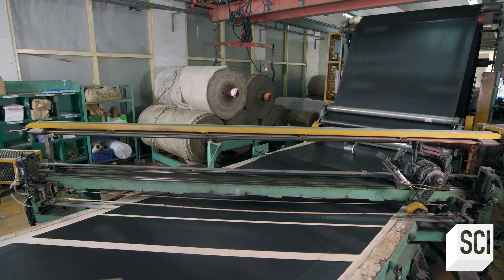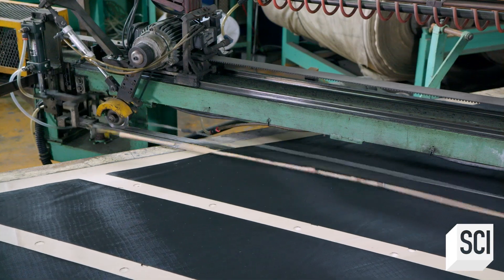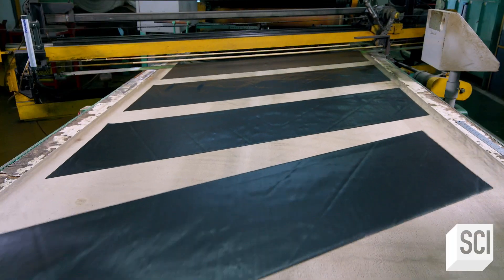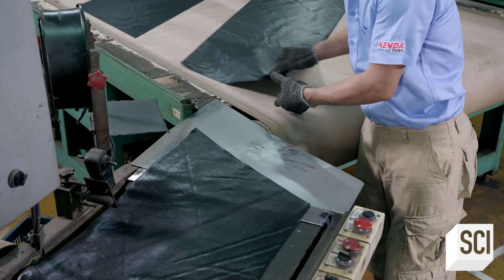Meanwhile, rollers coat fabric with rubber to make plies for the tire casing. A moving blade cuts it into strips. This rubber is naturally tacky, so the pieces can be easily spliced.